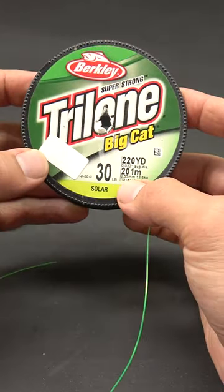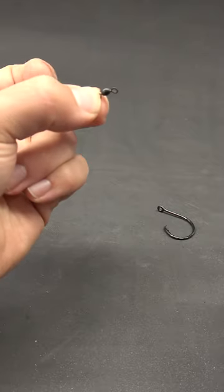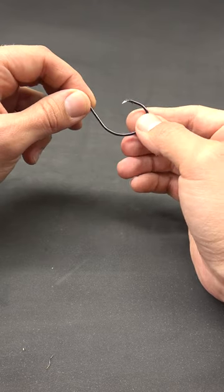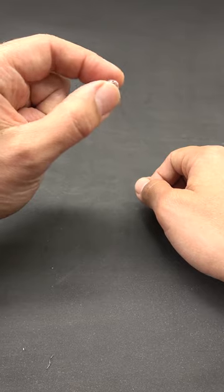You're going to need some leader material, 30 to 50 pound mono or fluorocarbon will do, an inline sliding sinker, a strong swivel, a quality heavy wire circle hook anywhere from 5 to 9-0 depending on the size of fish you're targeting, and a plastic bead.